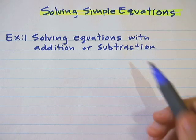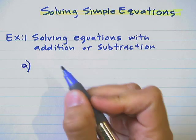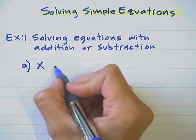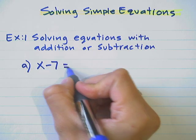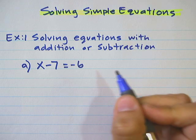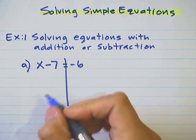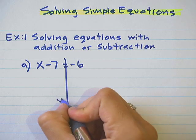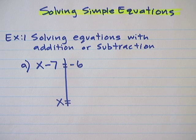These inverse operations are going to be useful in solving problems like x minus 7 equals negative 6. In solving this problem, your goal is to isolate the variable and get x all by itself. The word 'solve' is almost like solving a puzzle — you're trying to figure out what that missing number is.